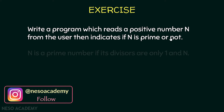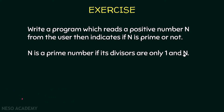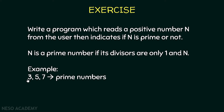So what is a prime number? n is a prime number if its divisors are only 1 and n. For example, the numbers 3, 5, and 7 are prime numbers. The divisors of 3 are only 1 and 3. The divisors of 5 are only 1 and 5. The divisors of 7 are only 1 and 7.